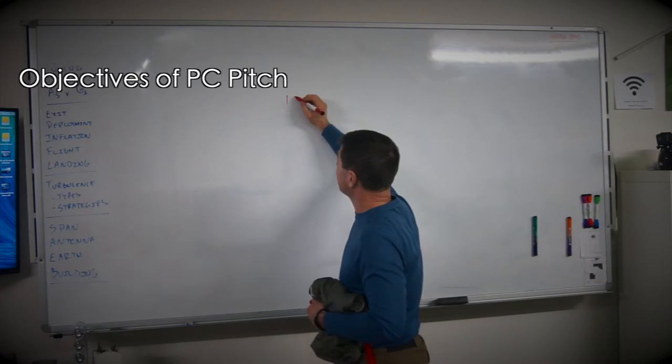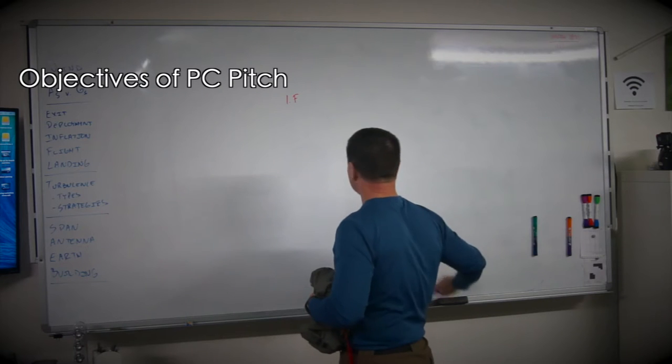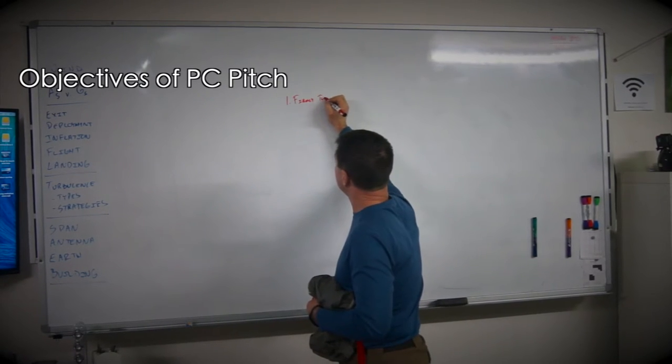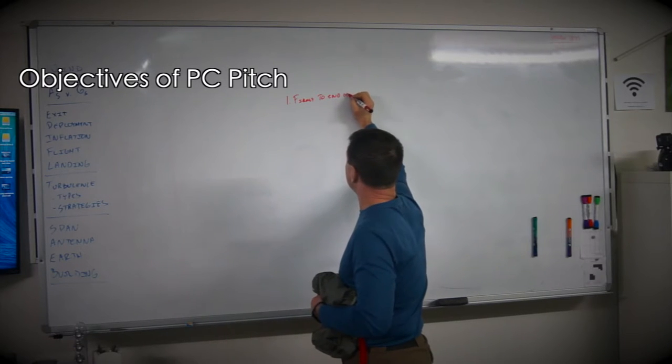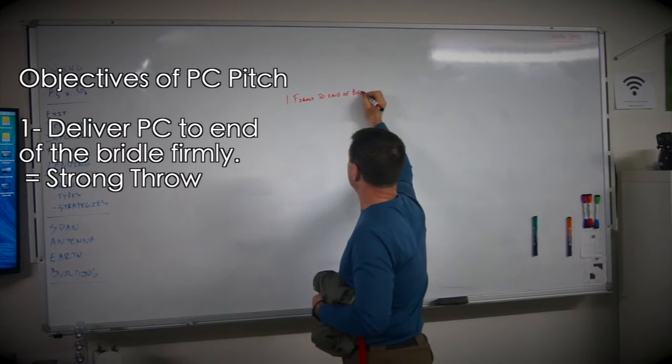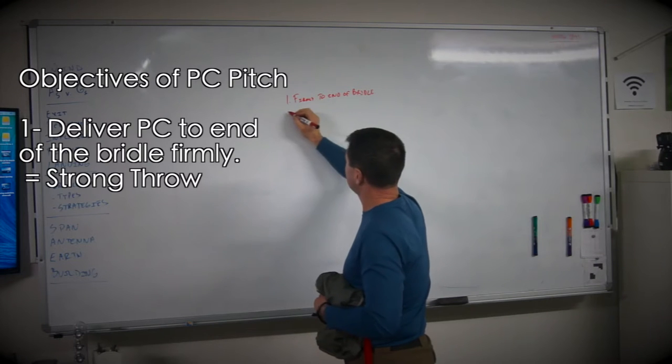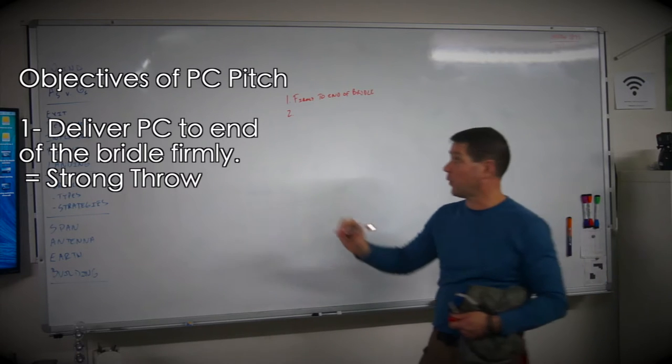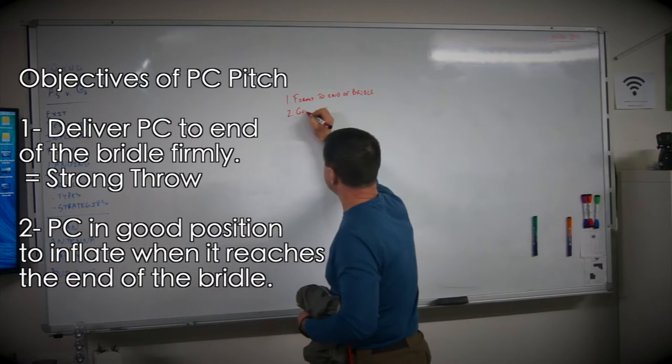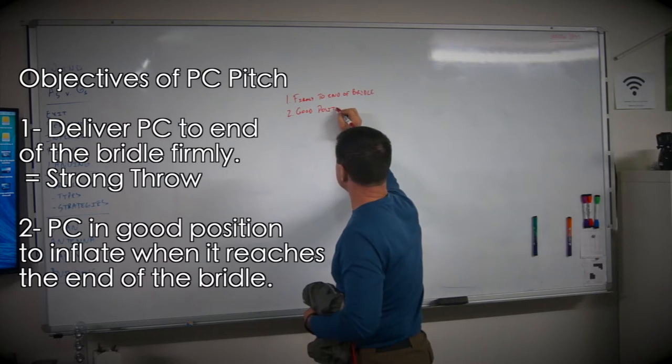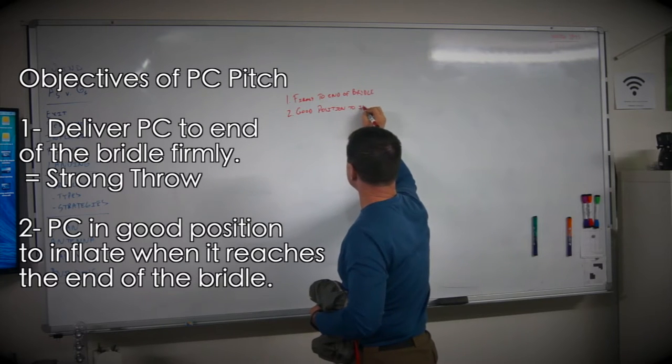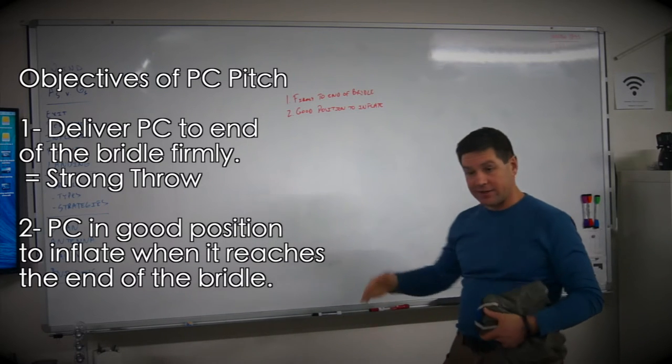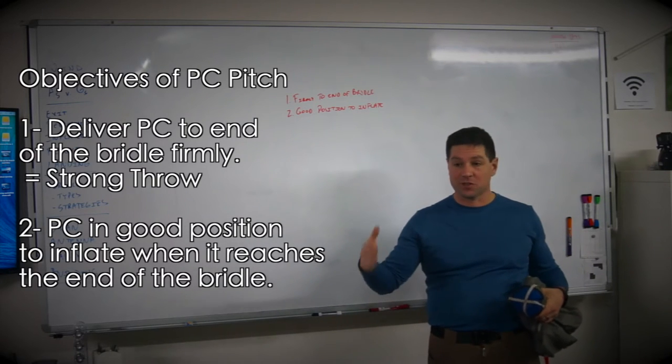We want to hit the end of the bridle firmly, which means you need to have a strong throw. And I want the pilot chute to be in a good position to inflate when it arrives at the end of the bridle. So these are my two primary objectives: have the pilot chute hit the end of the bridle firmly and in a good position to inflate.